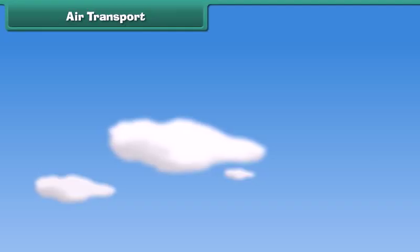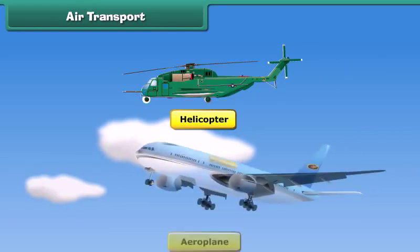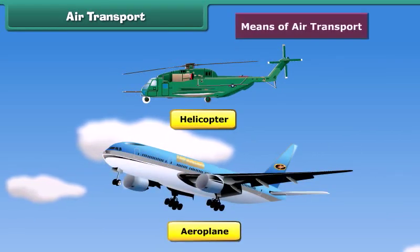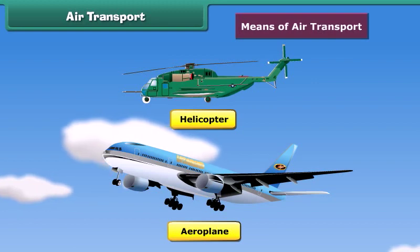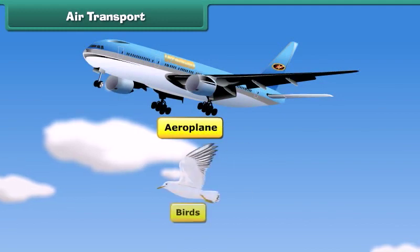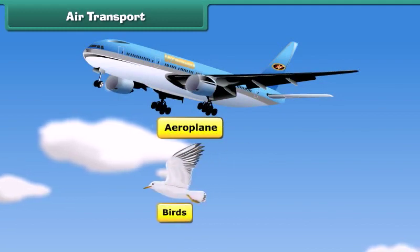You might have seen helicopters and airplanes in the sky. These are means of air transport. These run through airways. These vehicles have wings like birds that help them to fly in air.